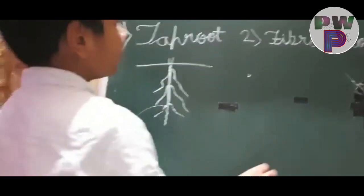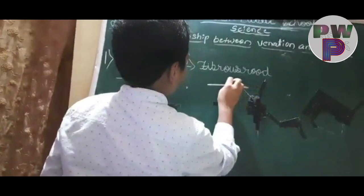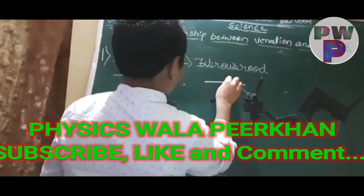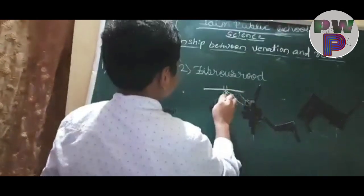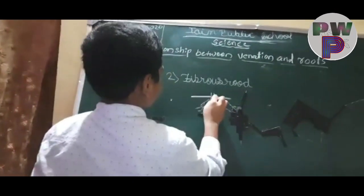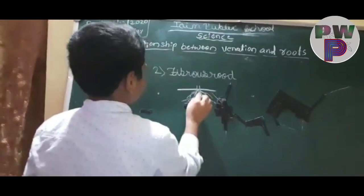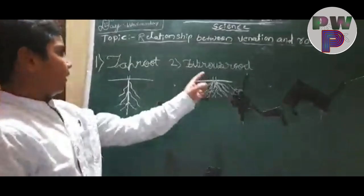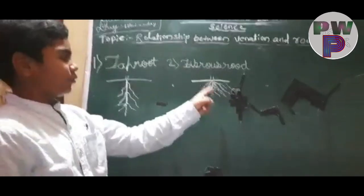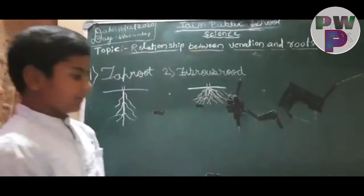Next one, fibrous root. Fibrous root will be like this. It has roots like this. In the fibrous root, no main root will be there. Only the lateral roots are there.